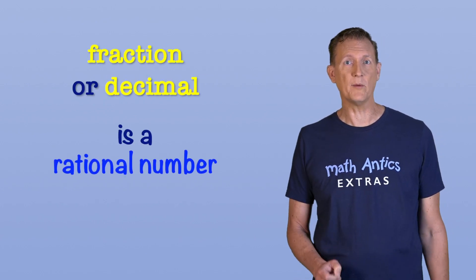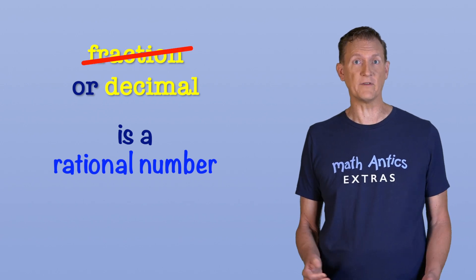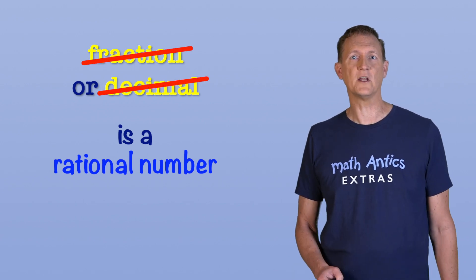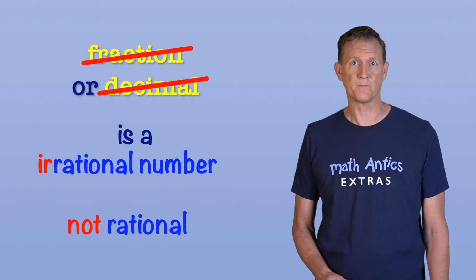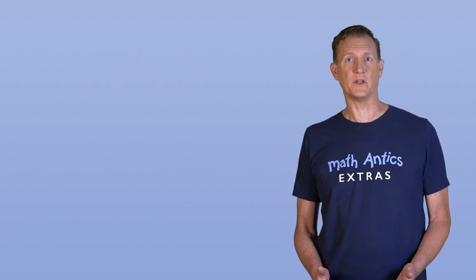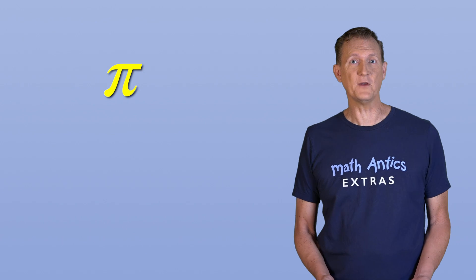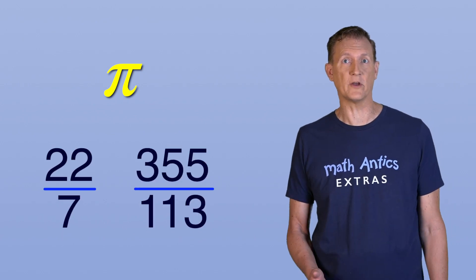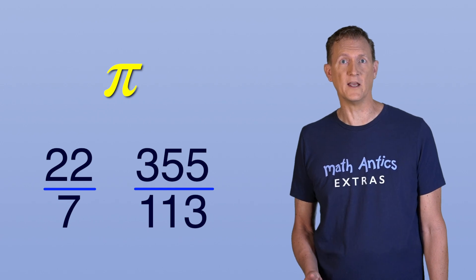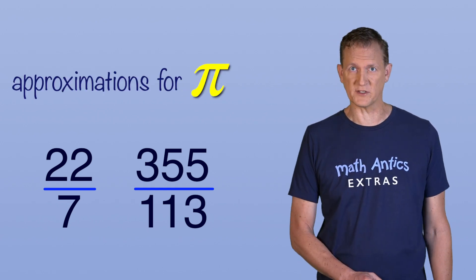But there are numbers that can't be written accurately as a fraction or even a decimal number. Those numbers are called irrational numbers because they are not rational numbers. One of the most famous irrational numbers is pi. And you might be confused because you may have heard that you can represent pi with a fraction like 22 over 7 or 355 over 113. But those are just approximations for pi.